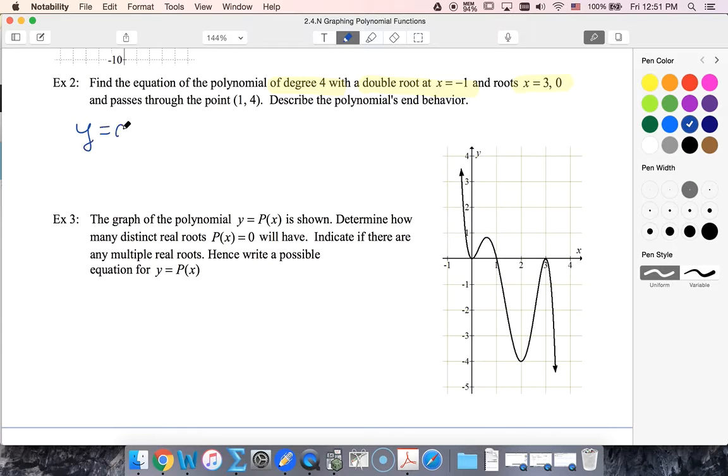So that tells me I'm going to have a times x plus one squared, because it's a double root, times x minus three, and then x minus zero. Of course, I can just write x.